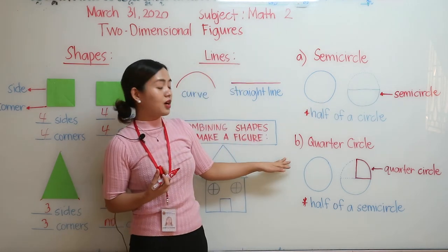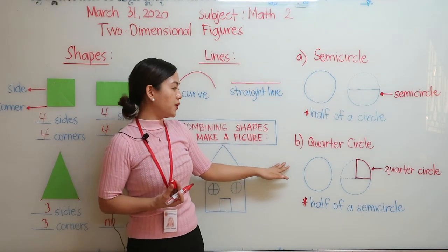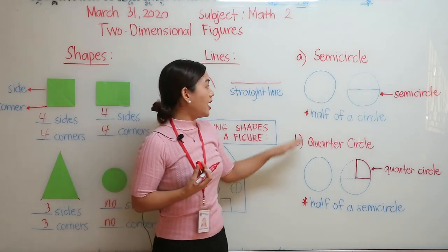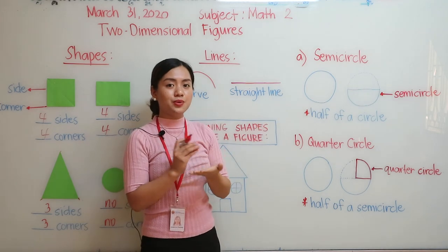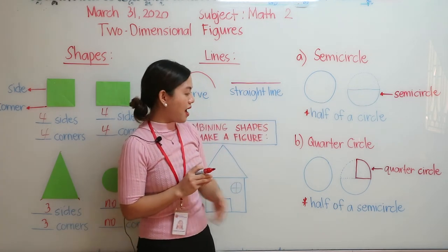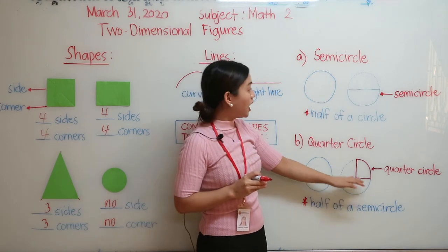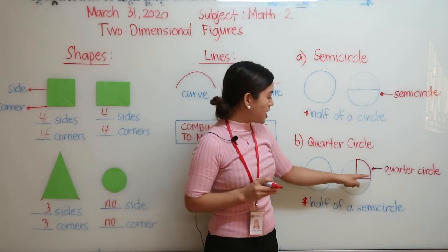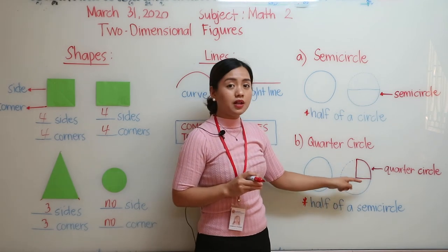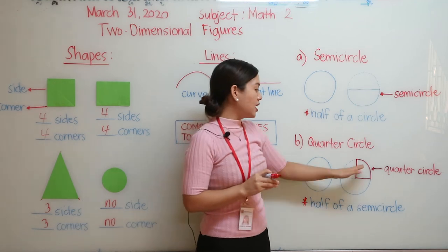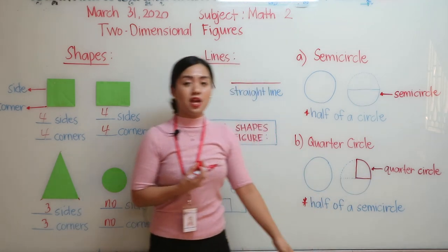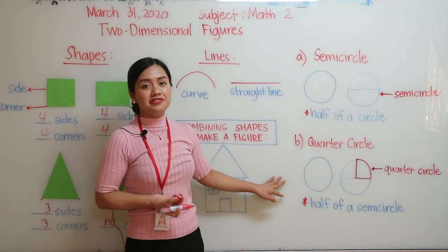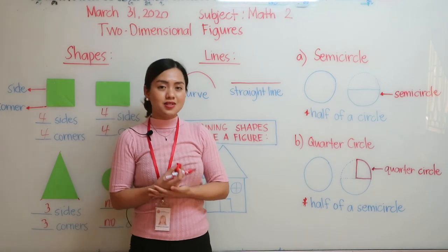We also have a quarter circle. We can form a quarter circle if a semicircle is folded in half as well. So if you fold a whole circle in half to get a semicircle, and then fold it in half again, you will form a quarter circle. In a circle, we can form four quarter circles.